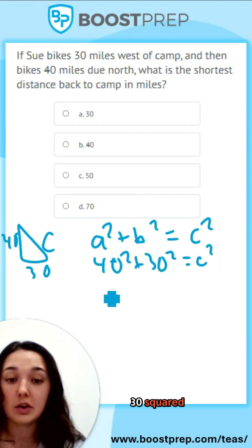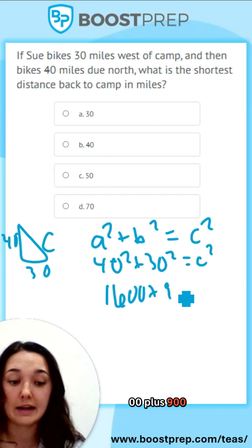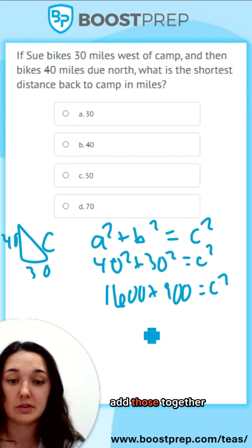So 40 squared plus 30 squared equals C squared. When you do 40 squared plus 30 squared, you get 1,600 plus 900 equals C squared. Add those together,